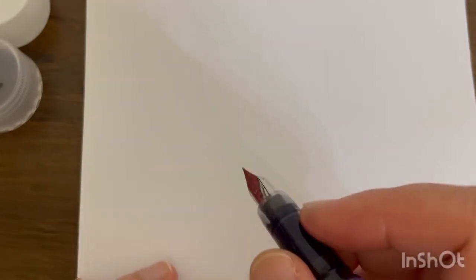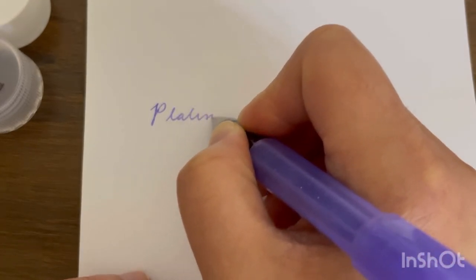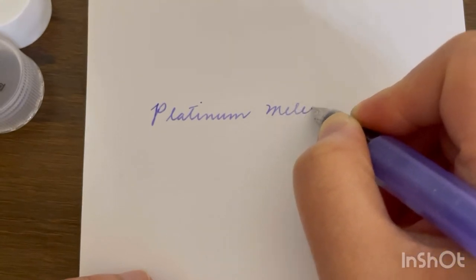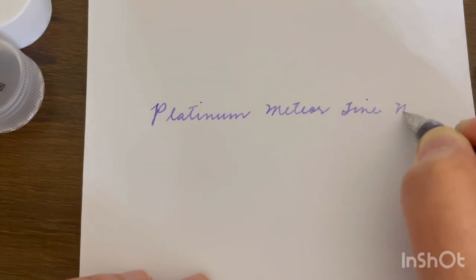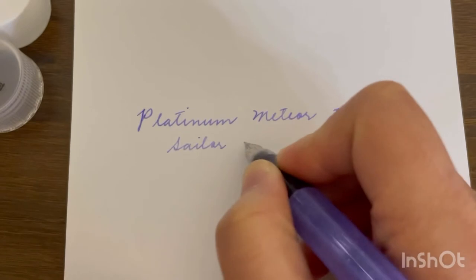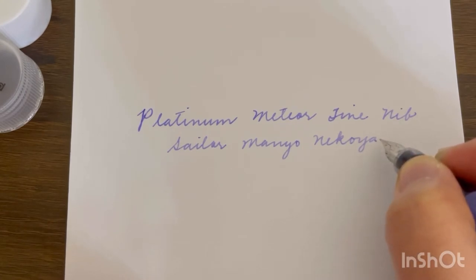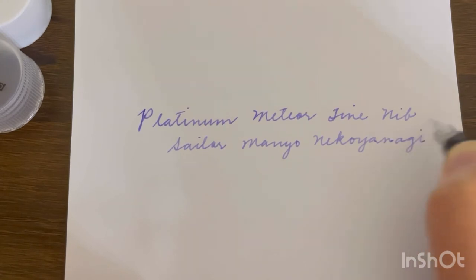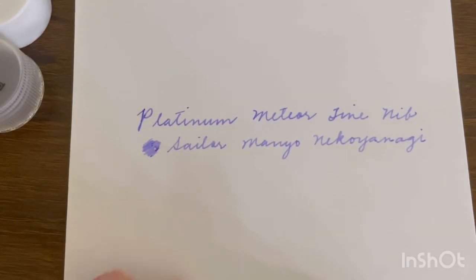Let me just show you how this pen writes. I'm going to write Platinum. I'm just using a regular paper. I'm gonna write the name. So this is Platinum Meteor. This is in fine nib and the ink that I'm using here is Sailor Manyo Nekoyanagi, which is a very nice lavender color.